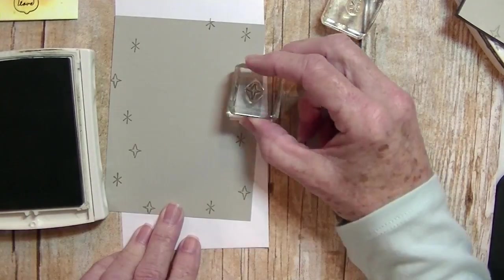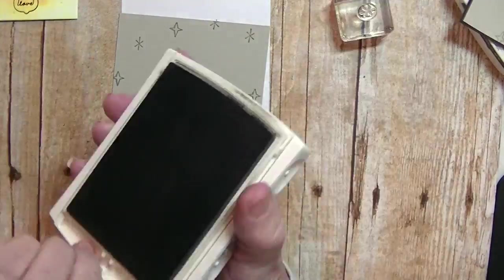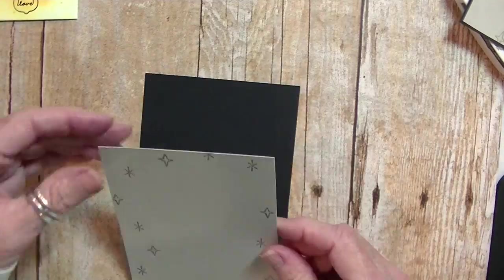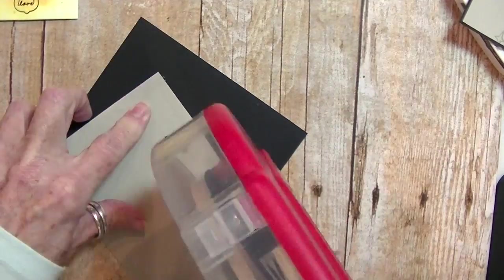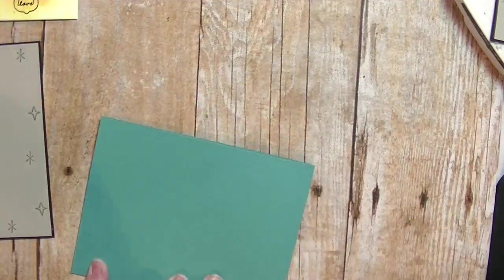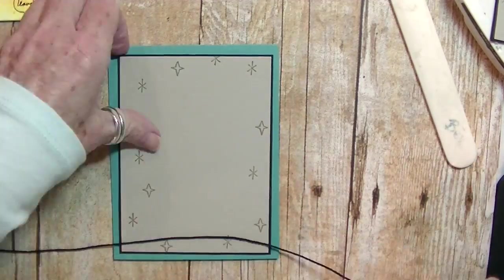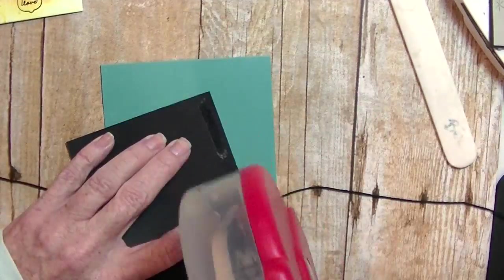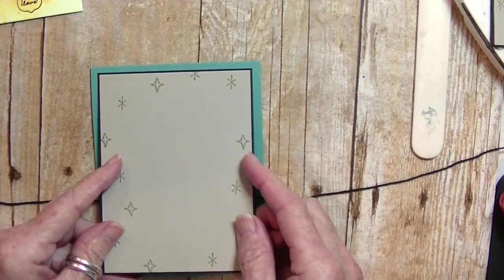So now we're ready to layer the background piece onto just a 1 1/8 inch larger cut basic black layer. Adhere that to a Bermuda Bay card base with some basic black thick twine behind it to create a little bow later.